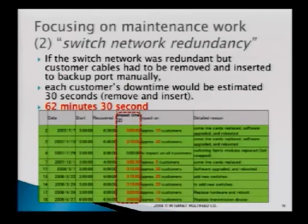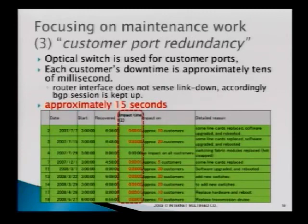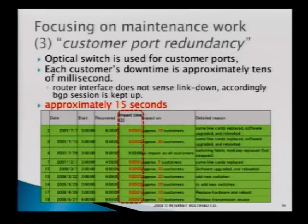If the switching network were redundant but had no optical switches, the downtime would be 62 minutes and 30 seconds. But as I explained, JPNAP has both redundant network and optical switches for ISPs. The optical switch changes from main port to backup port in tens of milliseconds — so for each event approximately one to two seconds of downtime — and the accumulated total is approximately 15 seconds of real downtime.